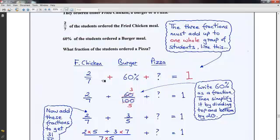60% chose a burger. We don't know what fraction of the students chose a pizza. But these three fractions, two-sevenths, 60%, and this fraction, they must all add up to the one whole group of students.